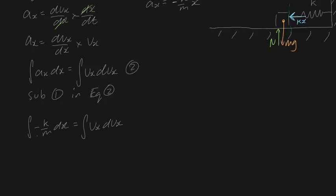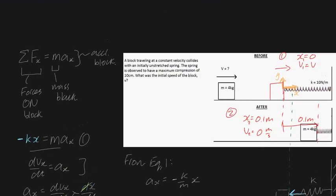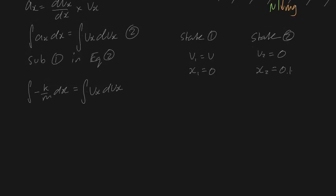Using these boundary conditions and plugging them into our definite integral: for the x-side we integrate from 0 to 0.1, and for the velocity side we integrate from v to 0. We can factorize k/m out, giving minus k/m times the integral of x dx, which evaluates to x²/2, with limits from 0 to 0.1, equal to the integral of v_x dv_x, which is v²/2, with limits from v to 0.